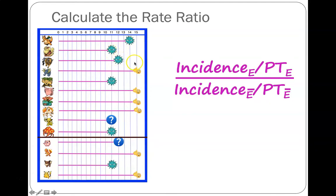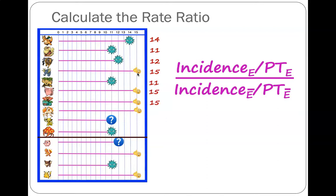To get person-time we add up all the person-time each individual participant contributes. The little Charmander contributes 14 days, next is 11, the Taurus contributes 12, then this one — no infection, healthy all 15 days — contributes 15. Moving on: 11, and a few more healthy ones at 15, 15, and 15.